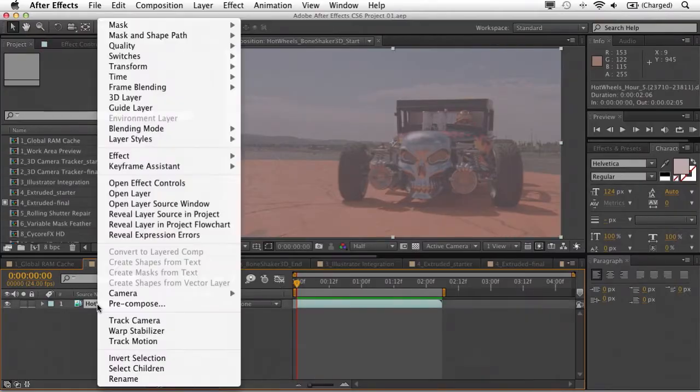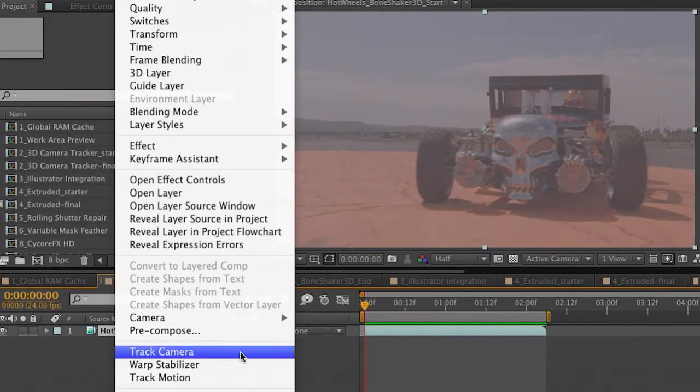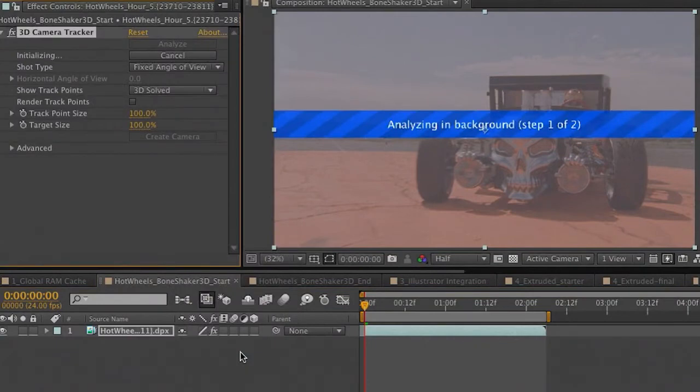I can take this DPX sequence that we have here, right-click and choose to track camera. And much like several other processes in After Effects CS6, this is a background process. It's analyzing in the background, which means I could go to other compositions or other applications and keep working and it's going to keep processing, all in an effort to really optimize and speed up the workflow when you're working in After Effects CS6.